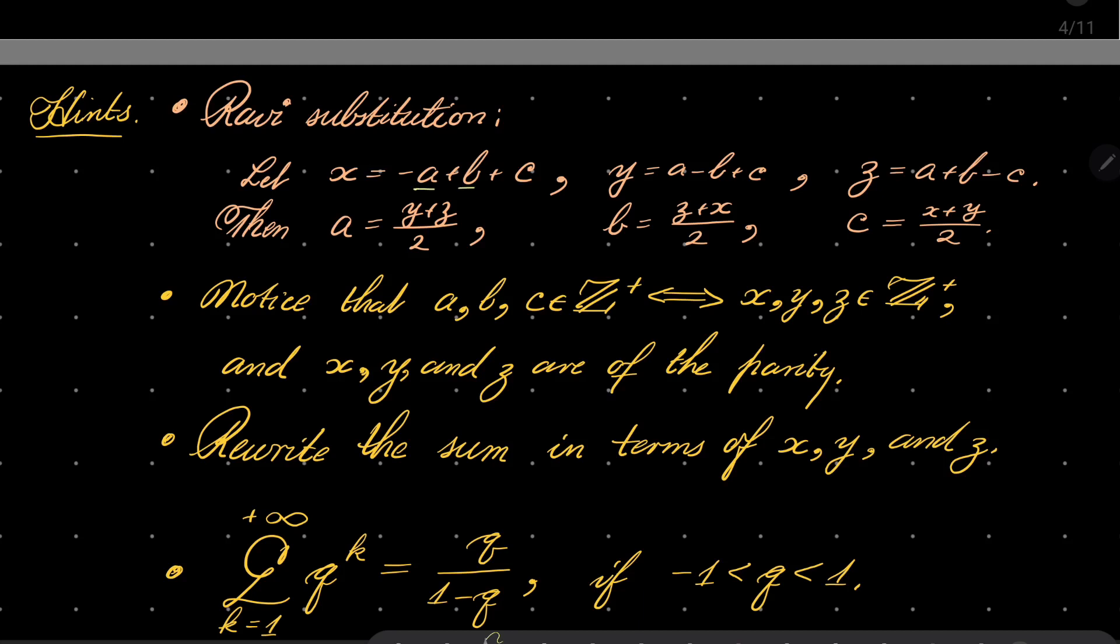And now it should be visible that these numbers a, b, and c are lengths of sides of a triangle if and only if x, y, and z are positive numbers because of the triangle inequality. And notice also that a, b, c are positive integers if and only if x, y, and z are positive integers of the same parity.